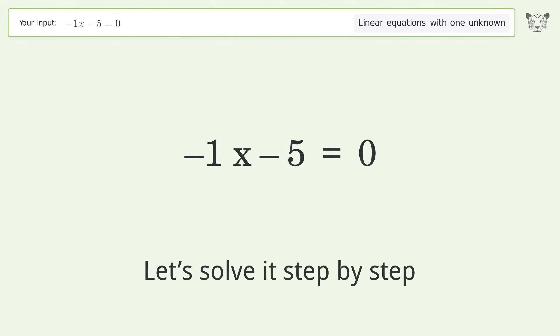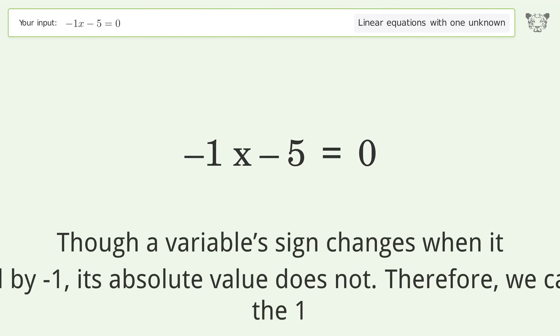Let's solve it step by step. Remove the ones. Though a variable's sign changes when it is multiplied by negative 1, its absolute value does not. Therefore, we can eliminate the 1.